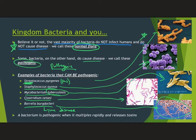Basically, a bacterium is a pathogen if it multiplies rapidly in your body and then creates toxins which damage your cells in some way — and that's the disease that you then exhibit.